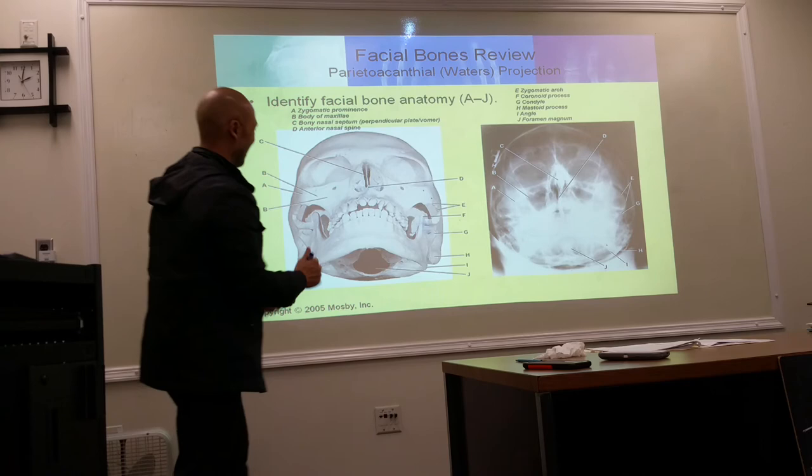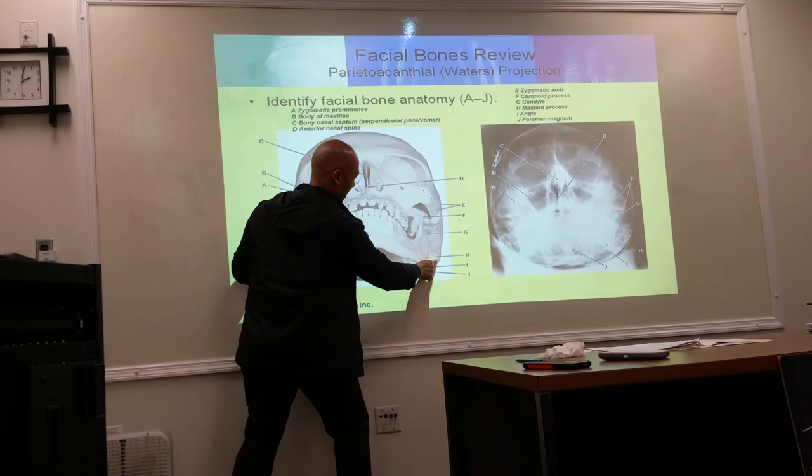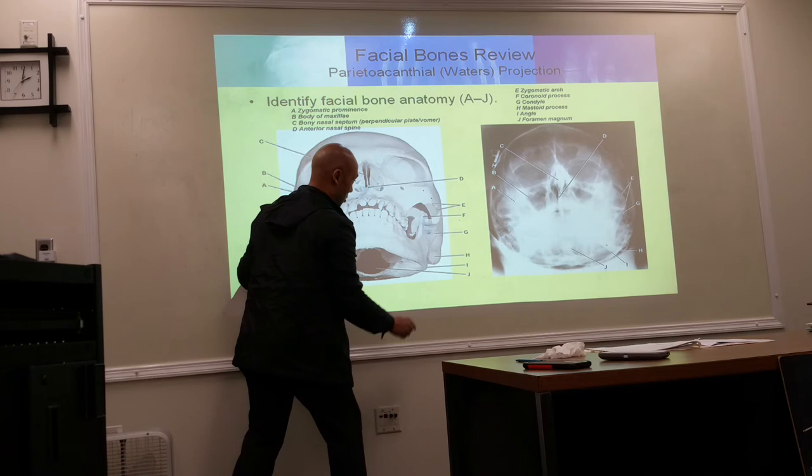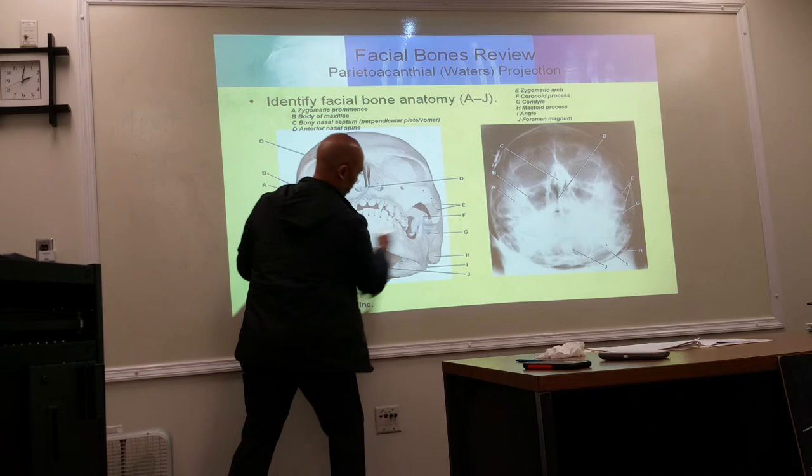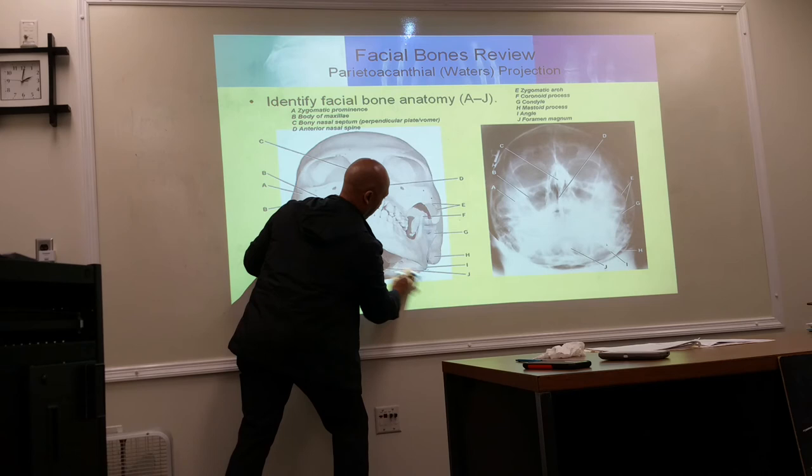Coronoid and condyloid processes are in between the notch. The temporal bone is also identified. The gonion — the angle of the jaw — is labeled as well.